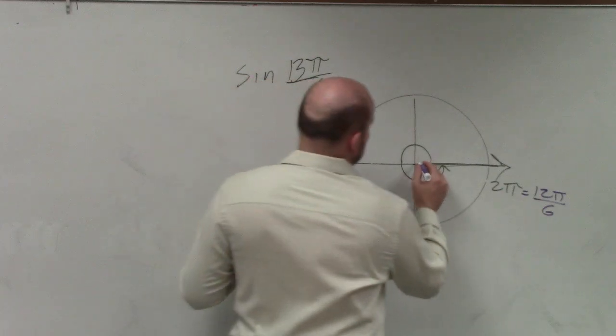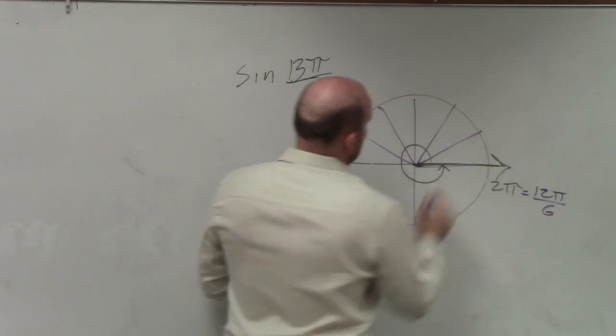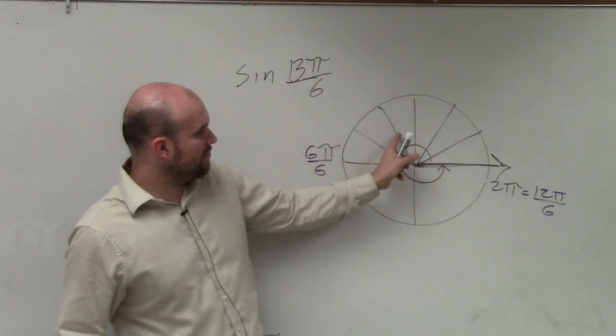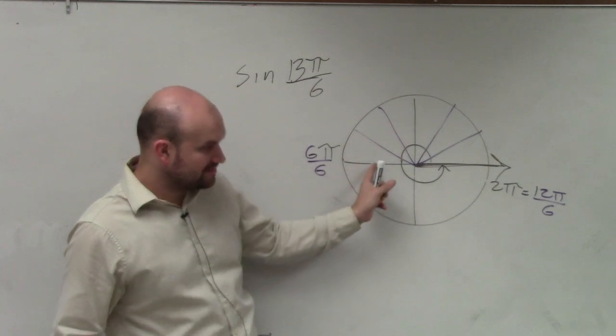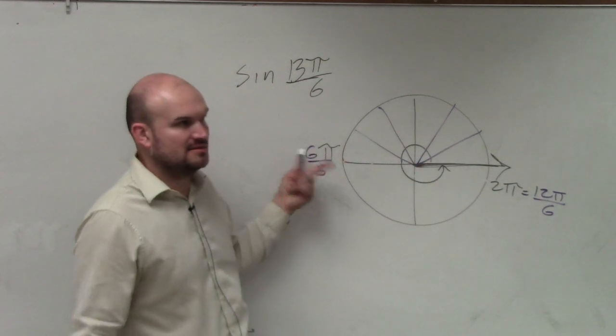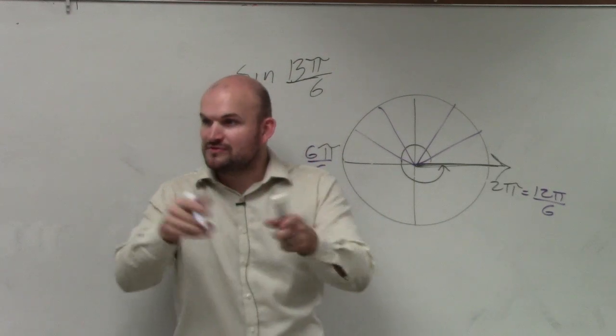And if you guys want to think about it, you can also look at it like this. 1 pi over 6, 2 pi over 6, 3 pi over 6, 4 pi over 6, 5 pi over 6, 6 pi over 6. Does everybody agree? I just broke up pi into 6 sixths. Just like remember when you learn fractions like, hey, take a candy bar, cut it up into 12ths, right? And count from there.